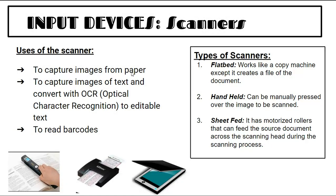Scanners are used to capture images from paper and convert text with optical character recognition (OCR) to editable text. You could scan a page of your textbook and with OCR software be able to edit that text on screen. Without OCR, the scan is treated as an image and you cannot interact with the text. Scanners can also be used to read barcodes.